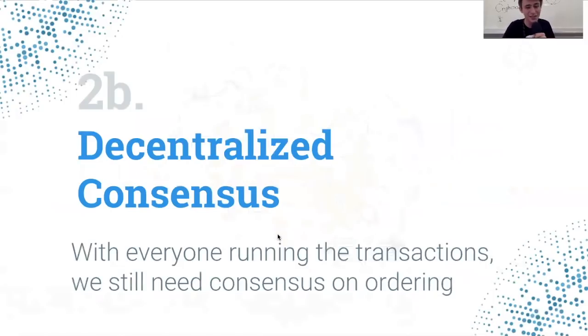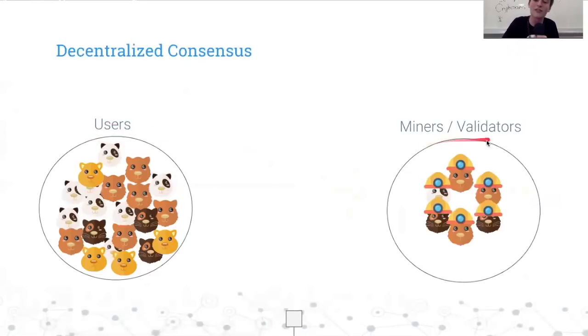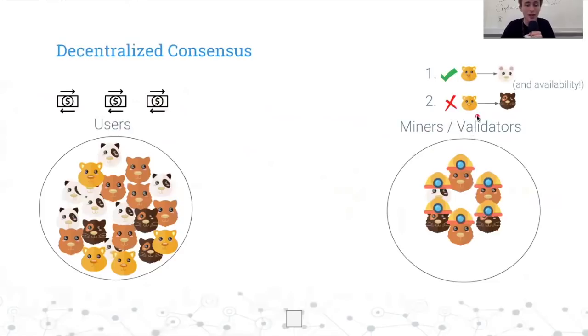Let's get into decentralized consensus. With everyone running the transactions, we still need consensus on ordering. We're going to take PayPal and turn it into Bitcoin. We have this group of users, people running the protocol and using the system. And we also have this group of miners slash validators. Users are going to generate transactions and send them. Miners are going to decide on the ordering of those transactions. Users can actually become miners and contribute to consensus formation.